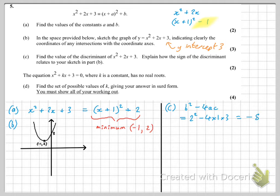Now, the fact that that's negative means that the equation x squared plus 2x plus 3 equals 0 has no real roots.